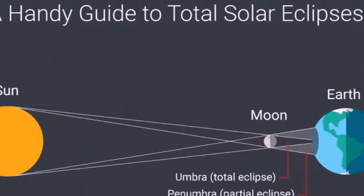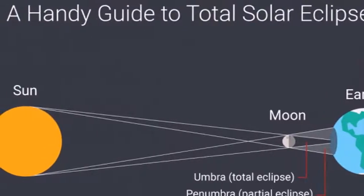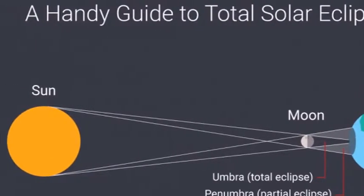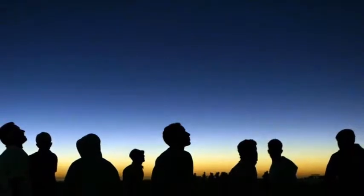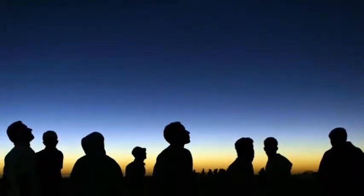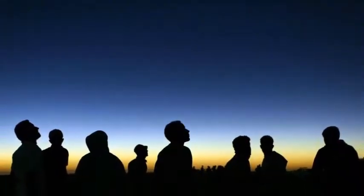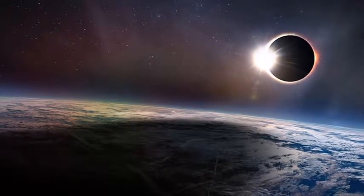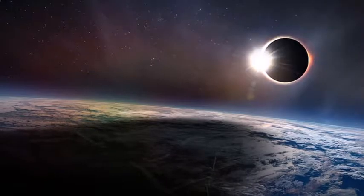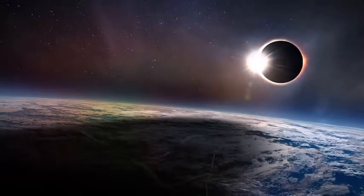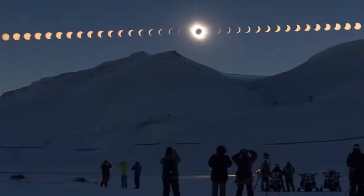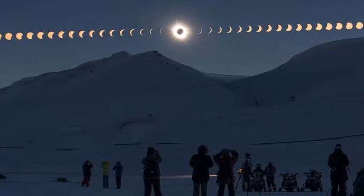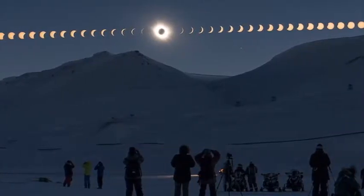None at all. You either have to find some eclipse glasses, break out some very dark welder's glasses, or use an indirect method like a pinhole projector to view the eclipse. Because if you don't, you risk permanent eye damage. So here's a short guide to why staring at the sun is so bad for you, and what you need to look out for when purchasing or using eclipse glasses.